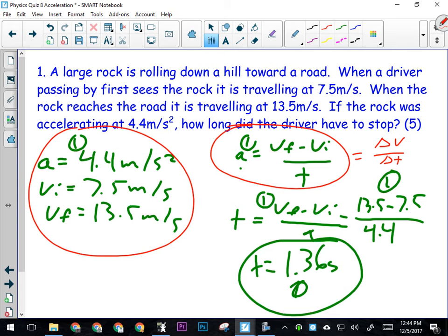Okay, now we have to manipulate this in order to get time by itself. So we're going to multiply both sides by time and then divide both sides by A. All right, so if they have the manipulated formula, give them a mark.